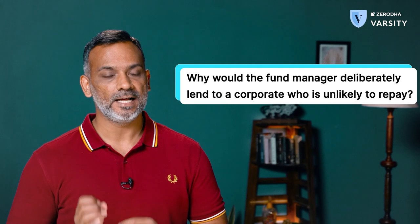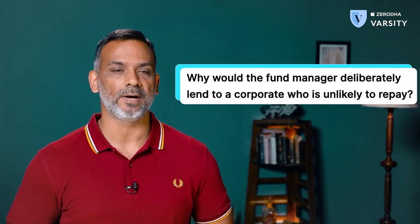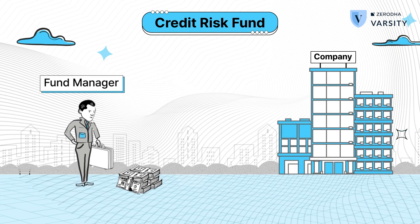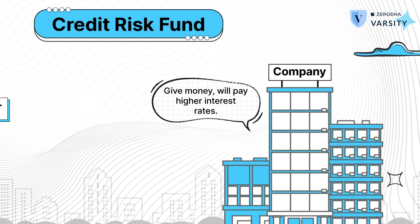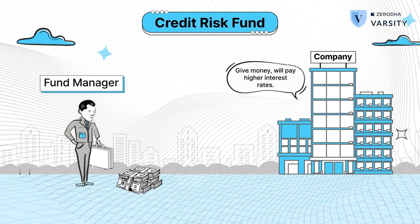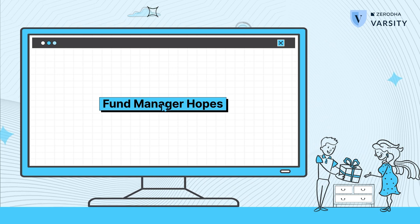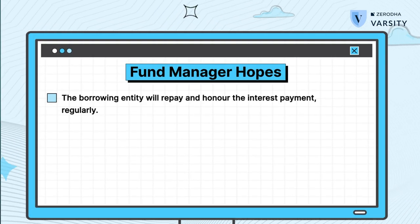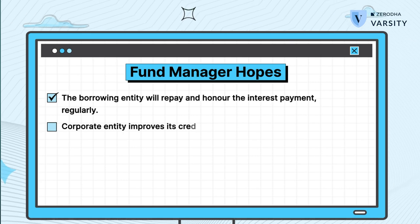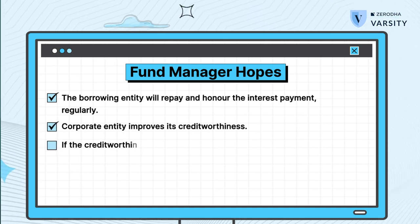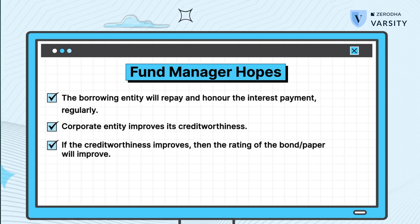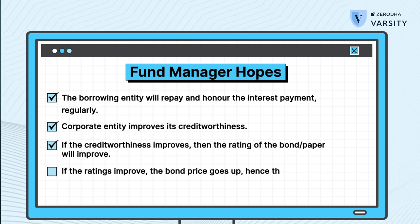Why would the fund manager deliberately lend to a corporate who is unlikely to pay back? The fund manager does so because the corporate in need of funds says, give me all the money and I'll compensate you with a higher interest rate. The corporate entity wanting to borrow money has to entice the fund manager by giving a higher interest rate. When the fund manager lends to such a company, the fund manager hopes the borrowing entity will repay and honor the interest payment regularly. The fund manager also hopes that the corporate entity improves its credit worthiness. If the credit worthiness improves, then the rating of the bond or paper will also improve. If the rating improves, the bond price goes up and hence the NAV.